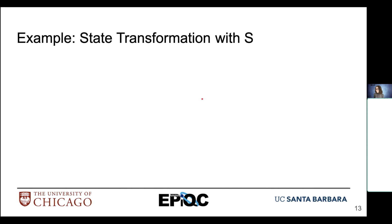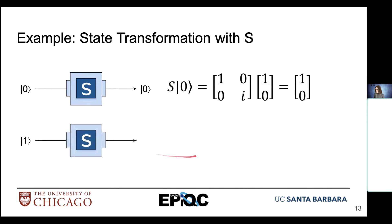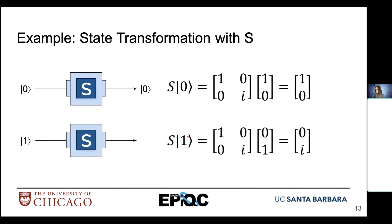Let's look at state transformations with S. When we apply the S gate to |0⟩, it maps to |0⟩ unchanged. When we apply S to |1⟩, we get i|1⟩ — a |1⟩ state with an i phase factor. So now we are generating states that have complex phase or complex probability amplitudes associated with them.